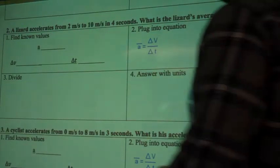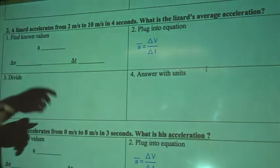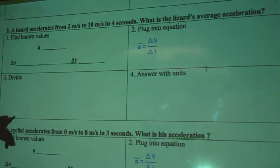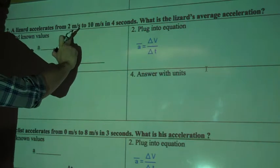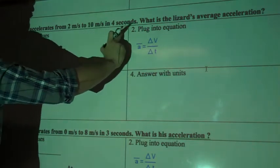Number 2 says a lizard accelerates from 2 meters per second to 10 meters per second in 4 seconds. What's the lizard's average acceleration? So he accelerates from 2 to 10 in 4 seconds.